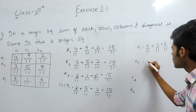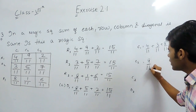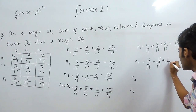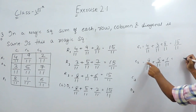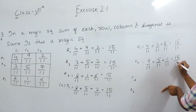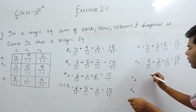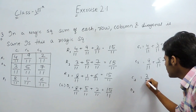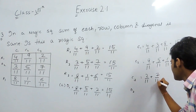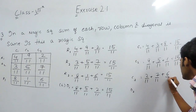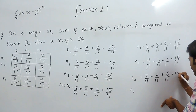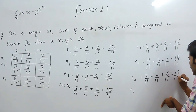Now checking the second column: 9 upon 11 plus 5 upon 11 plus 1 upon 11. That is 9 plus 1 is 10 and 10 plus 5 is 15, so again it will be 15 upon 11. Now we will check the third column: 2 upon 11 plus 7 upon 11 plus 6 upon 11, that will be 7 plus 2 is 9 and 9 plus 6 is 15 upon 11.